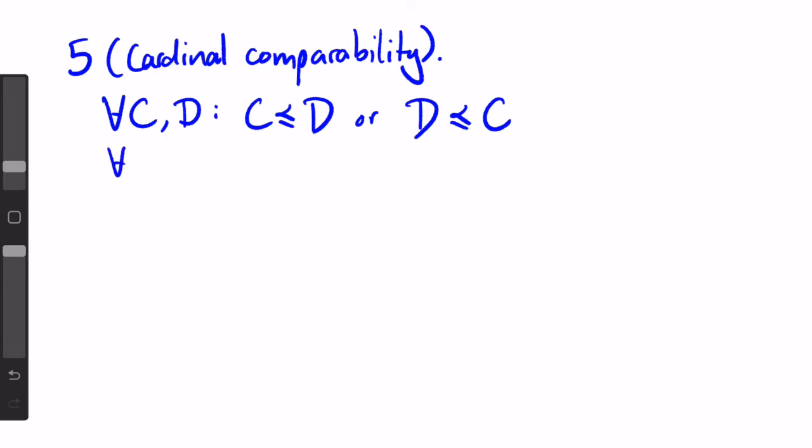Another way of saying this is for any two cardinal numbers, kappa and lambda, either kappa is less than or equal to lambda, or lambda is less than or equal to kappa.